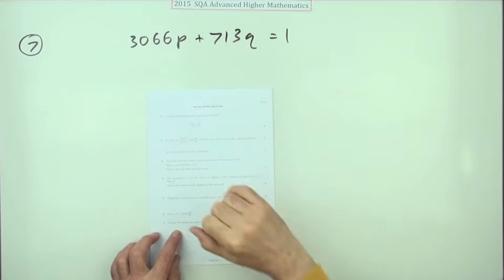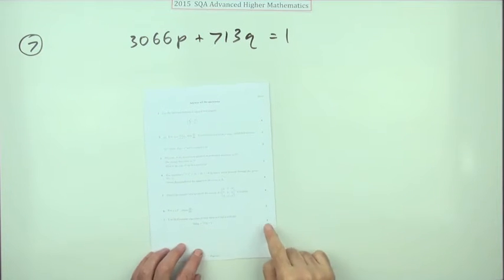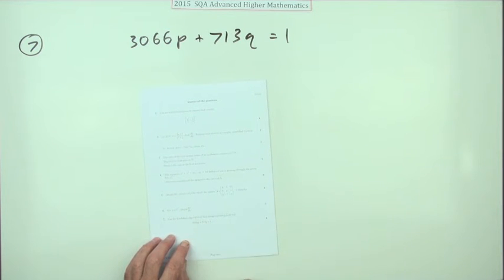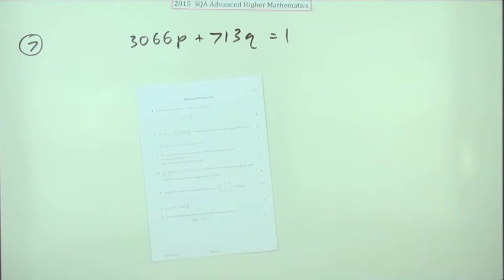Number 7 from the 2015 Advanced Higher Maths: Euclidean algorithm for four marks. You can see straight away that the greatest common divisor is going to be 1 because it's stated in this Diophantine equation.